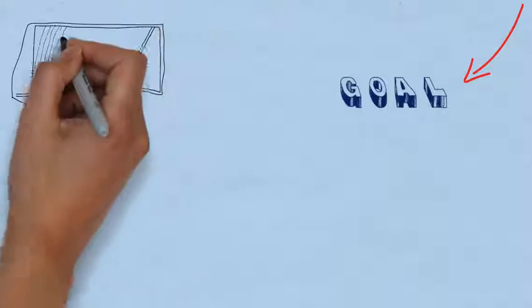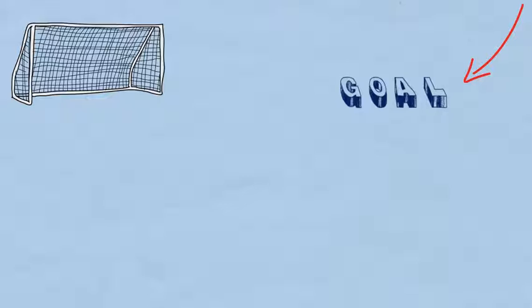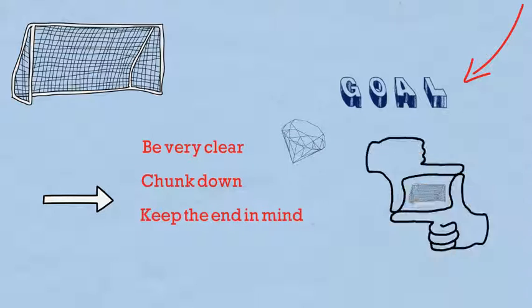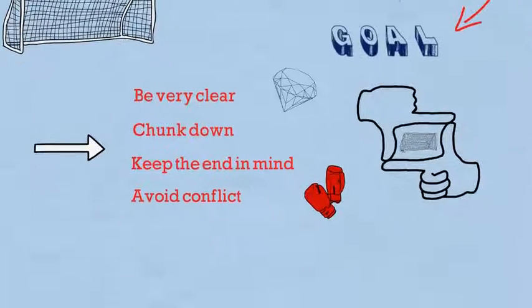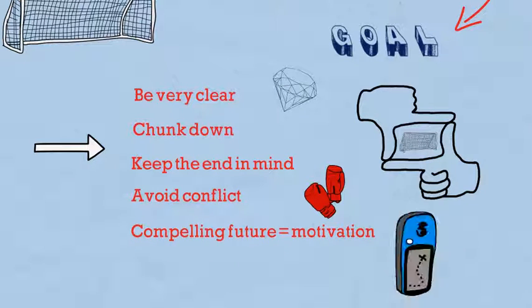Goal is what the client wants to achieve and the specific output of the coaching session. This first stage gives coaching its distinct forward-moving characteristic by enabling the client and coach to be very clear about what they are working to achieve, chunk the goals down into smaller achievable goals, ensure that all actions are geared towards achieving the goals. Begin with the end in mind, as Dr. Stephen Covey would suggest. Ensure that the goals are not in conflict with other goals and develop a compelling future and thus the motivation to take action.